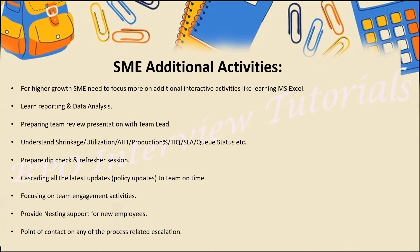SMEs should understand metrics such as shrinkage, utilization, EHT, production, TAQ, SLAQ, and status — all of which are primarily the team leader's tasks. However, in the absence of the team leader, the SME should be aware of each one and learn the formulas for how EHT and utilization are calculated. All related videos are available in the playlist, so do check and learn.